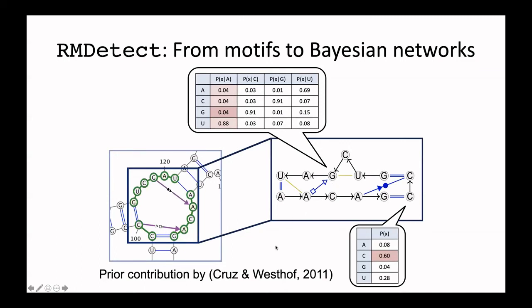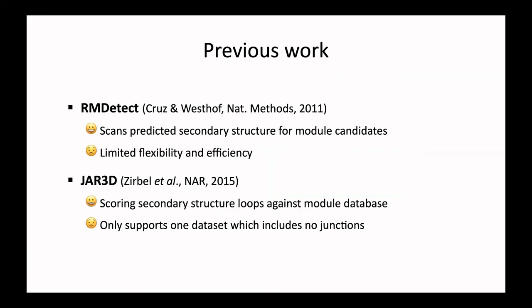This representation of motifs using a Bayesian network does not come from us — it's a prior contribution from Eric Westhof and José Cruz, published in Nature Methods in 2011. We tried to improve the usability and performance of this approach. Previously there was the work called RM-Detect by Cruz and Westhof published in 2011, and also JAR3D, another software developed by Craig Zierbel et al. in 2015. The difference was that these provided a minimal amount of functionality and it was very difficult to use them for large-scale applications automatically.